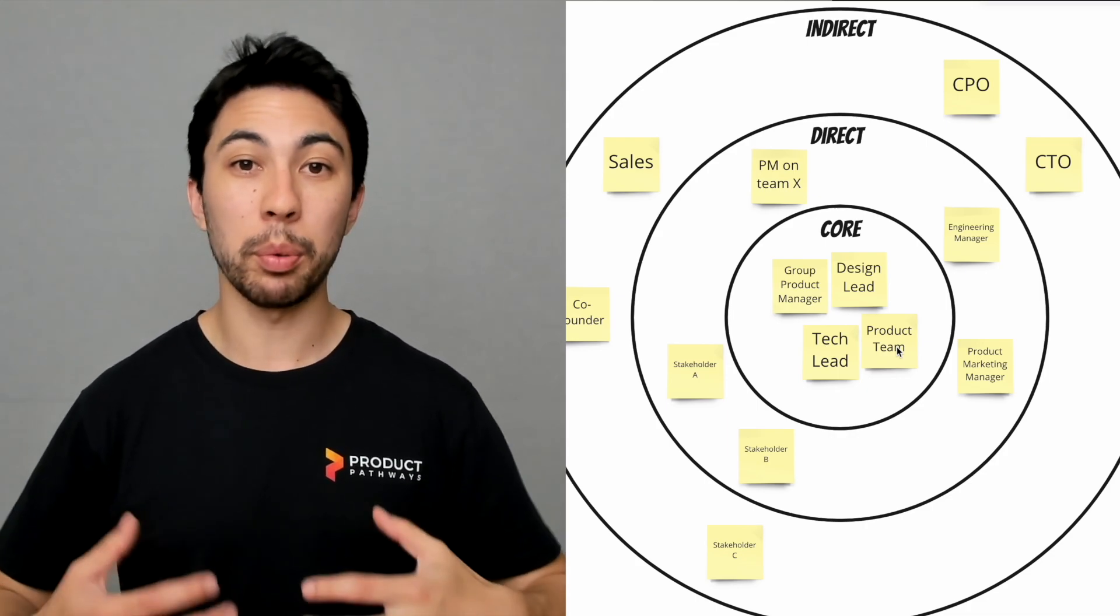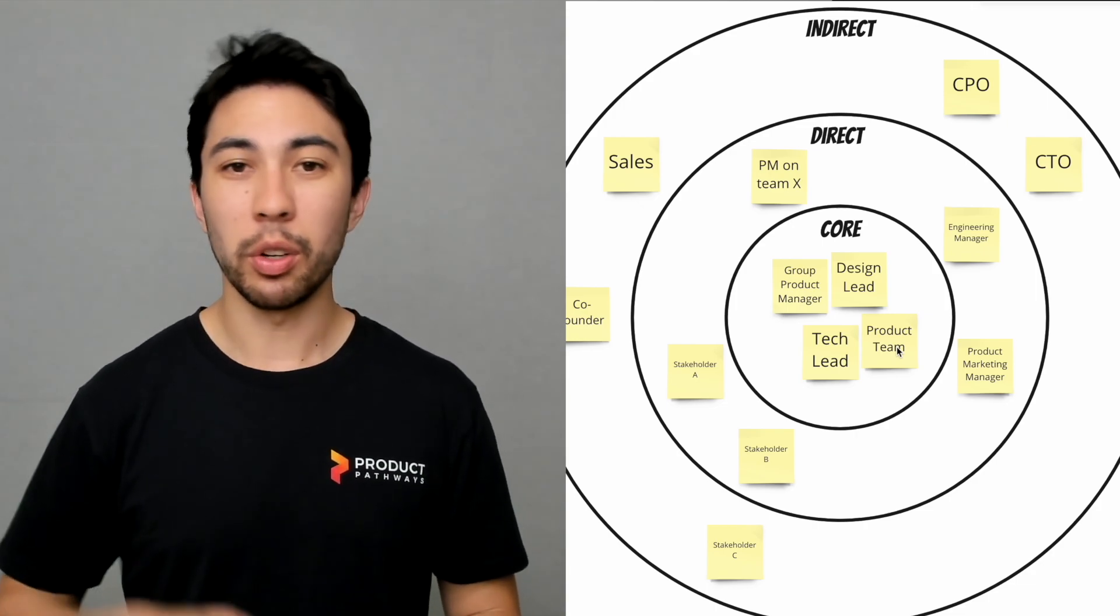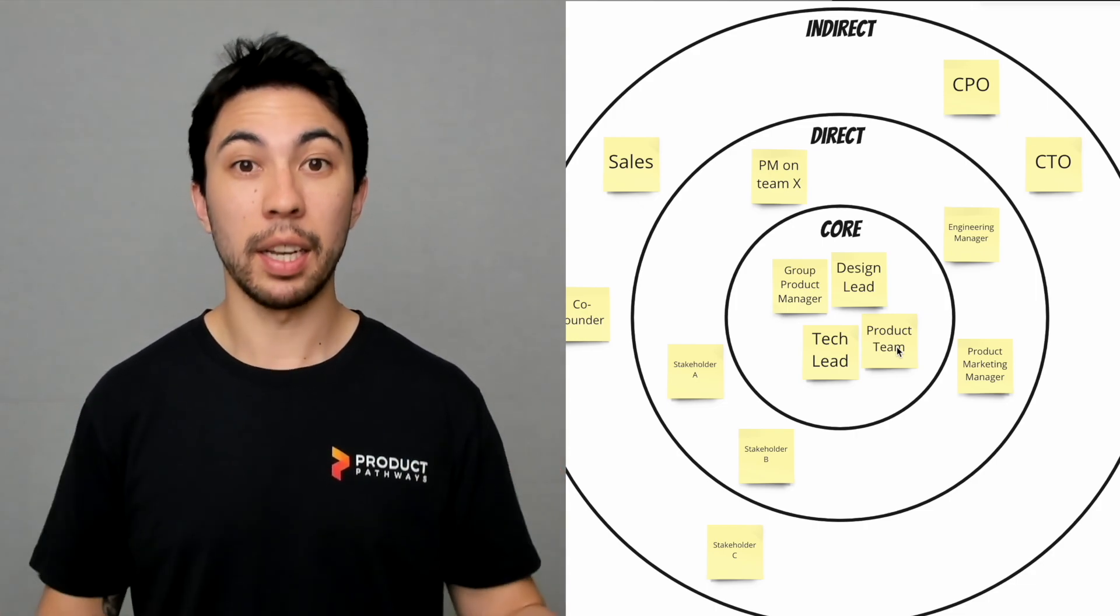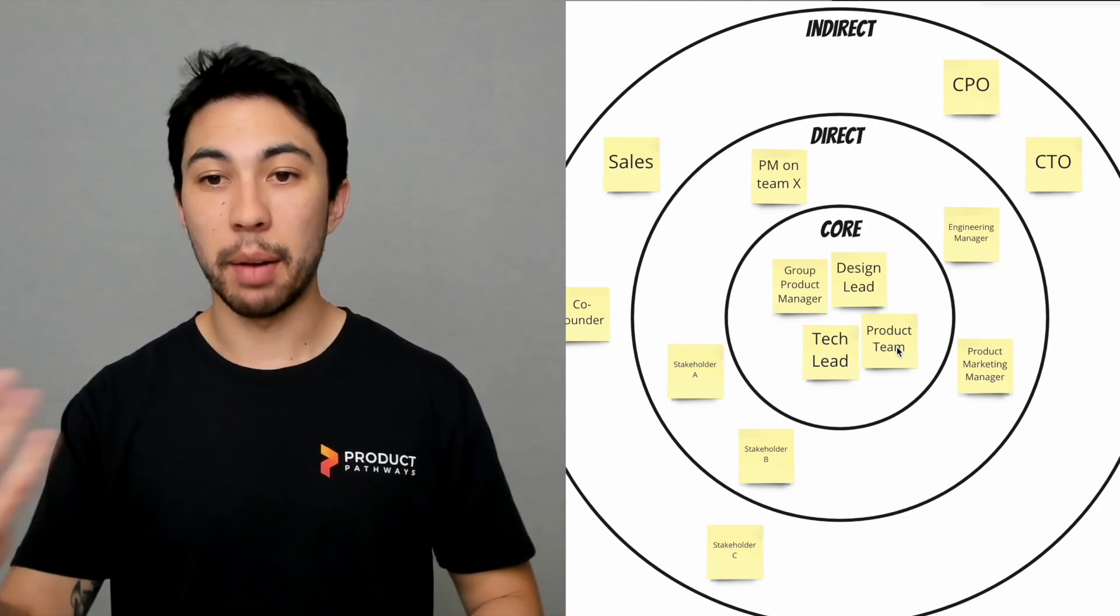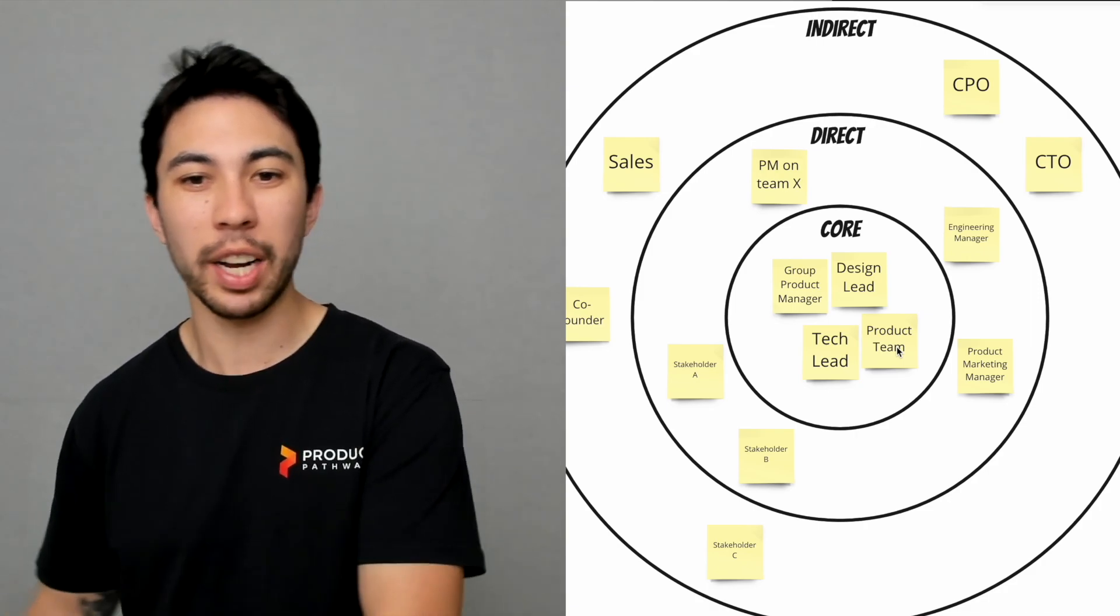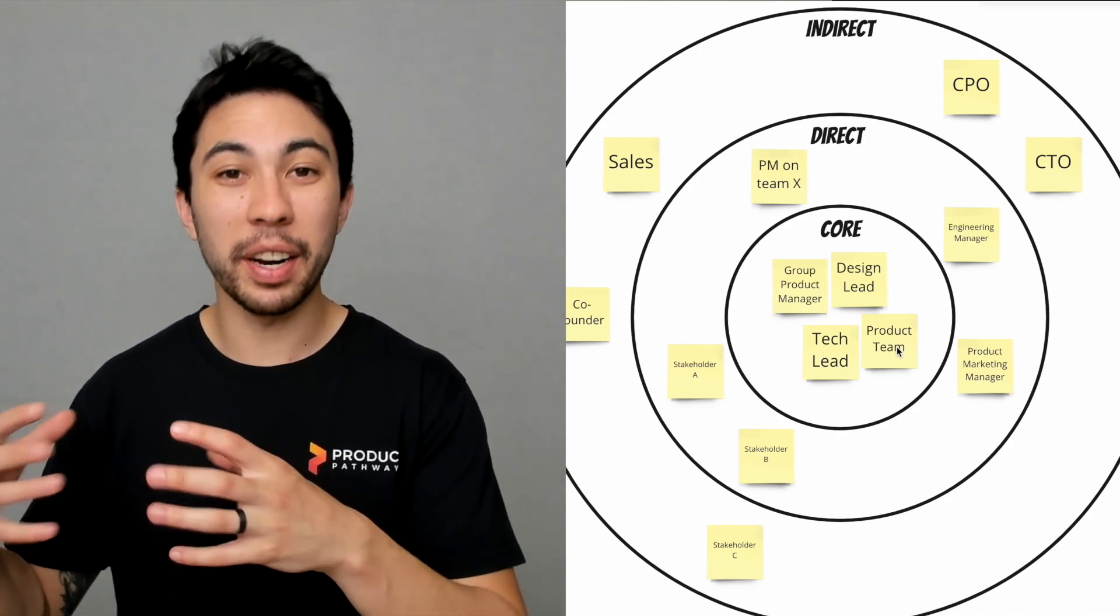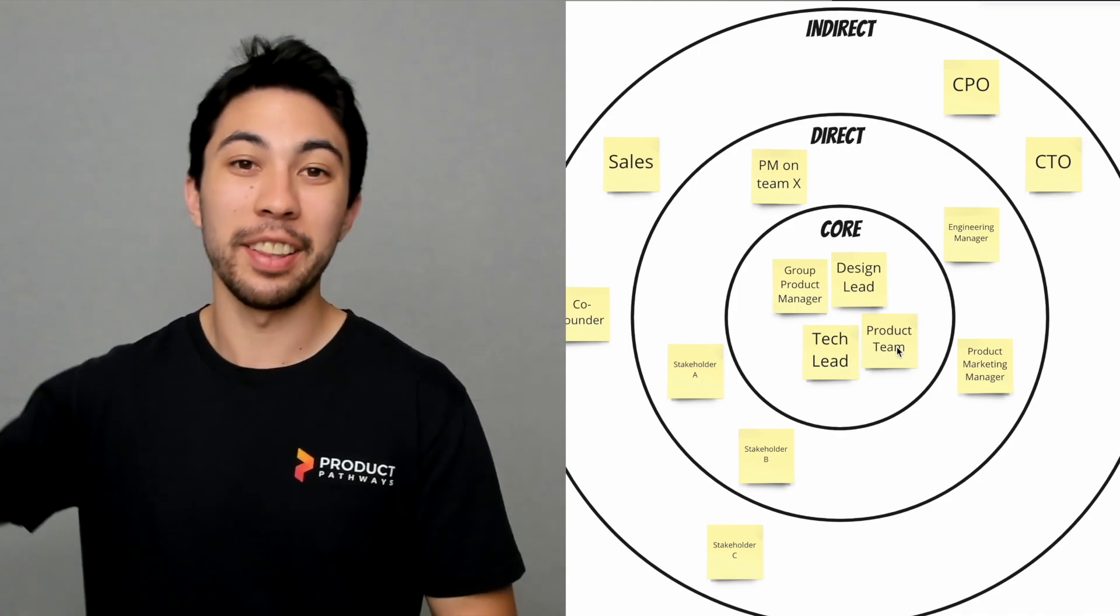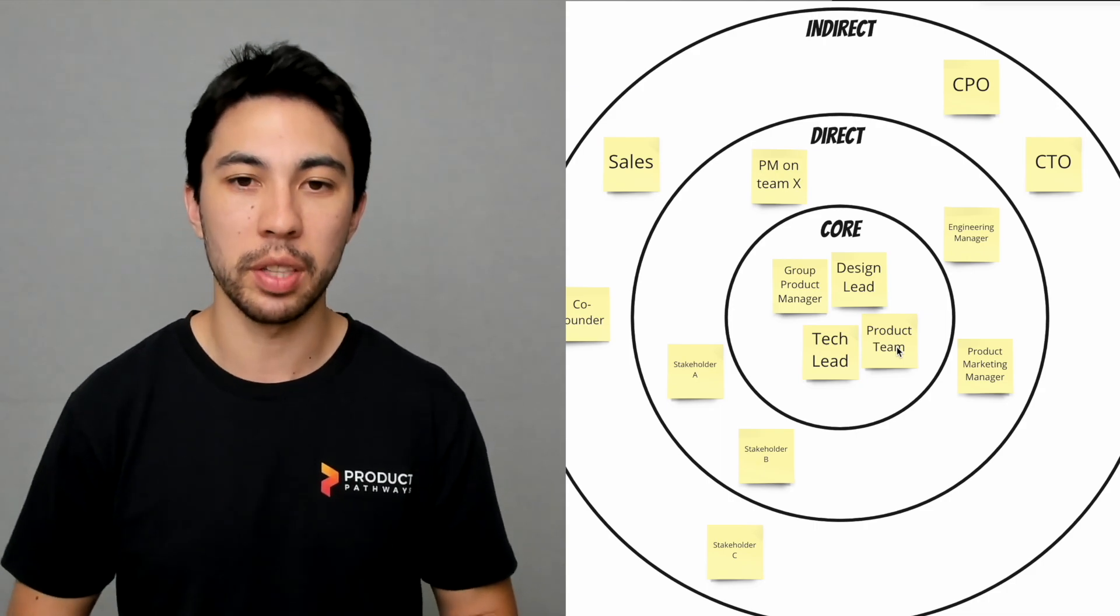Finally, we get to indirect, which is more the people who need to be informed. You're not directly collaborating with these people; you're keeping them informed, and they're indirect stakeholders for that reason. I've got some people there like founder, the CPO, maybe CTO. You can see the difference there: the tech lead is your core stakeholder, the engineering manager is your direct stakeholder, and then their boss, the CTO, becomes the indirect. You can kind of see how that ladder works.